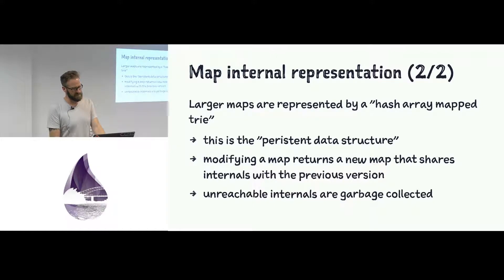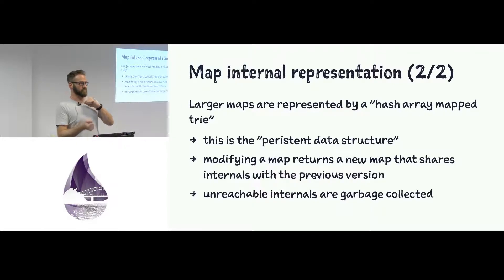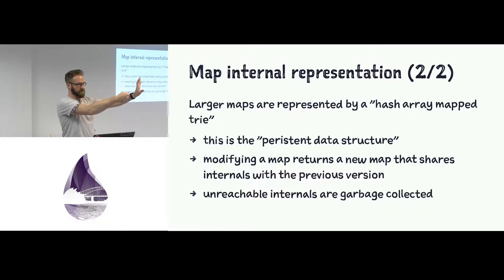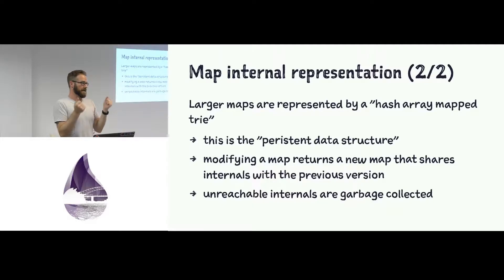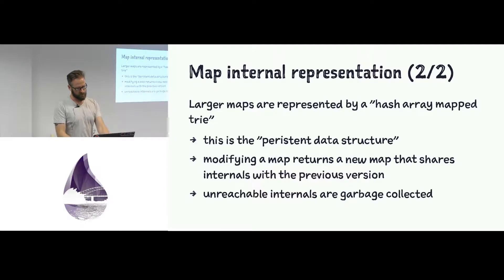For maps over 32 keys, there's a persistent data structure that underlies maps in Erlang and BEAM. When you have a map of thousands of keys and want to create a new map that deletes a single element, it doesn't copy all 999 keys. It creates a reference back to the structure of the other map with metadata recording the deletion. The garbage collector in BEAM is smart enough to understand the internal structure, and once the original map drops off being referenced, anything not shared by another map can still be freed.